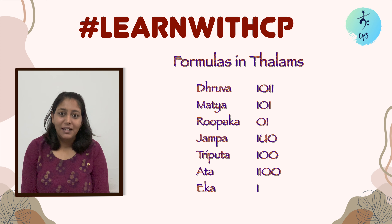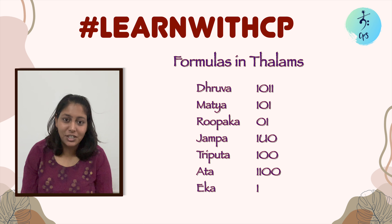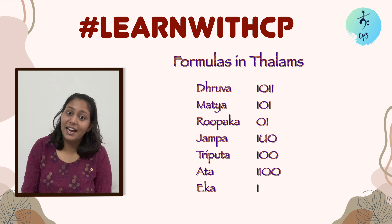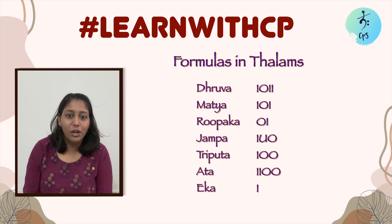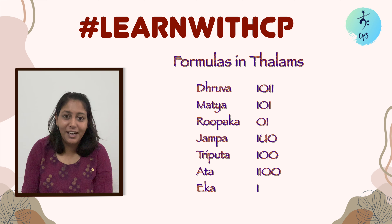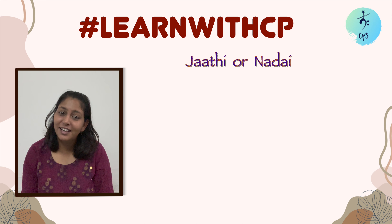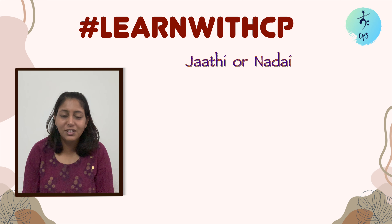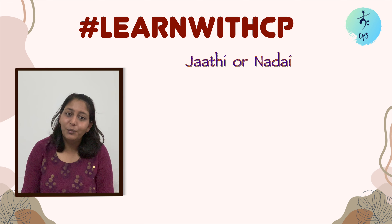We spoke about how lagu is the only one that has the tendency to change on counts — it can have three, four, five, etc. We also spoke about jati. Now we'll see how many jatis and nadais there are and how they can be applied to all these formulas. The word nadai itself tells us it is the number of aksharas or counts in a single beat of a tala.